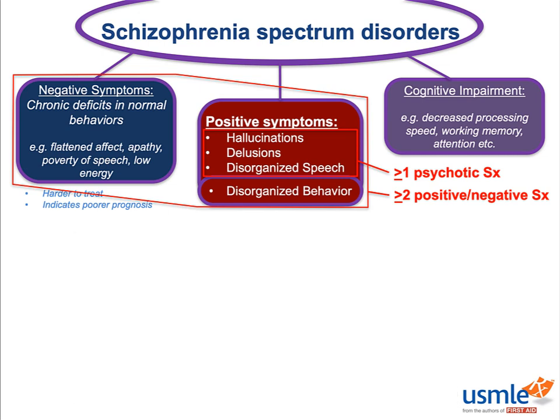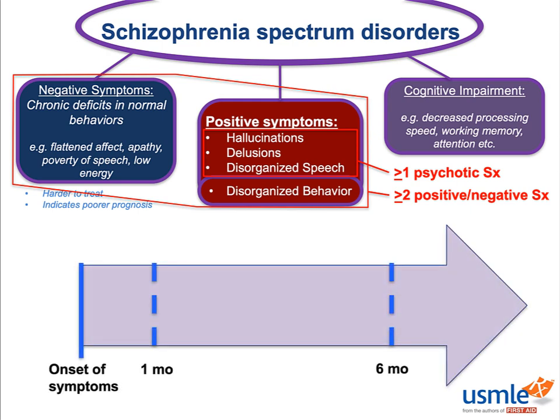Most of the psychotic disorders are classified by duration. A psychotic disorder lasting six months or longer is schizophrenia. From one to six months is schizophreniform disorder. And less than one month is brief psychotic disorder. Remember, the onset is counted as the onset of any symptoms, including the prodrome, not just when the psychotic symptoms kick in.